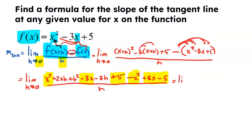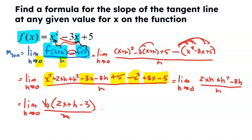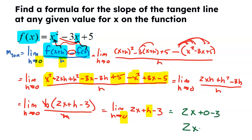After all the dust settles, the limit as H approaches 0 — all that's left on top is 2XH plus H squared minus 3H. Those are the terms that did not cancel, all divided by H. You could try plugging 0 in for H, but you're still going to get 0 over 0. So I still have more algebra ahead. I noticed all three terms on top have an H in common, so I can factor out that H. I get 2X plus H minus 3, all divided by H. Now these H's will reduce — H divided by H is 1. So I get the limit as H approaches 0 of 2X plus H minus 3, and now I can use direct substitution, plugging in 0 for H.